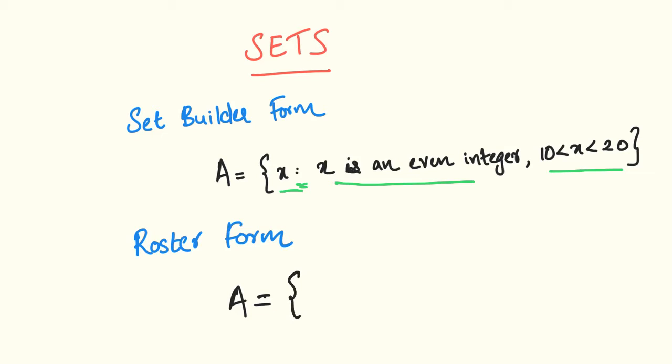The values will be 12, 14, 16, 18, 20 — because x is an even integer and x is less than or equal to 20, so set A includes 20.